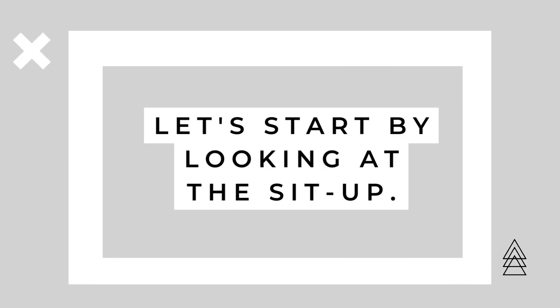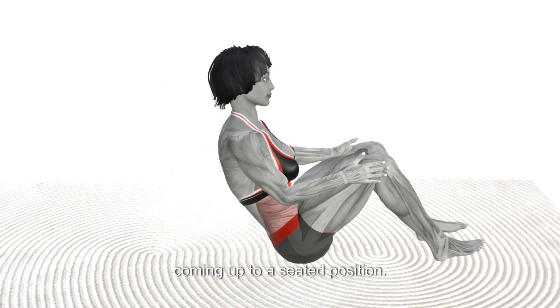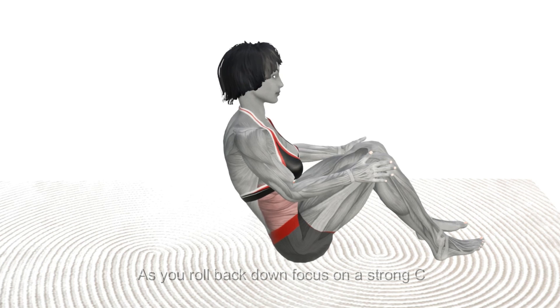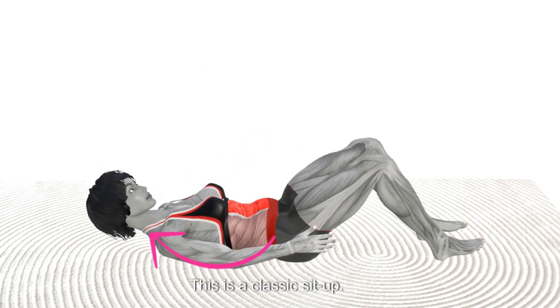Let's start by looking at the sit-up. With your back on the floor, knees a fist's distance apart, slide your hands up your thighs, slowly coming up to a seated position. As you roll back down, focus on a strong C-curve in your spine. This is a classic sit-up.